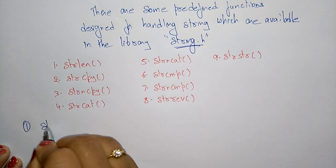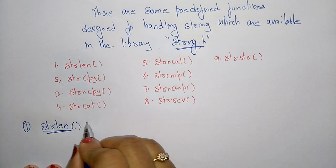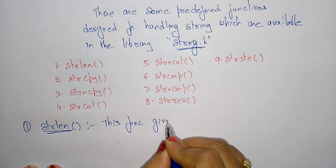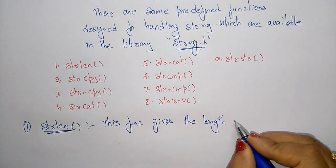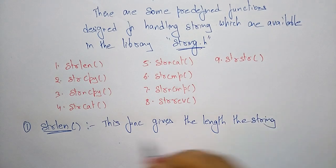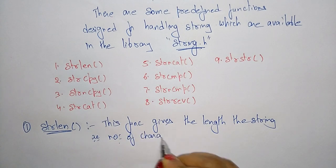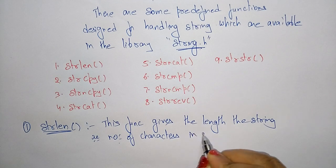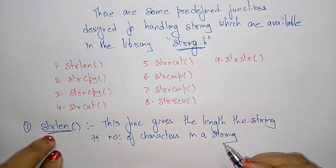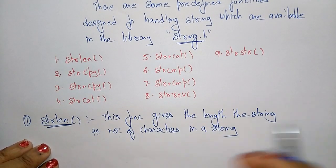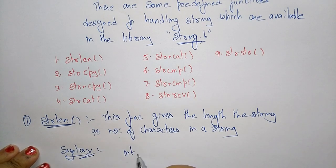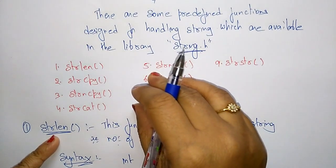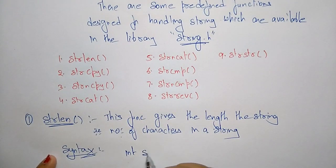The first one is strlen — string length. The main use of this function is that it gives the length of a string. Whatever string you provide, this function specifies its length, that is, the number of characters in the string. The total number of characters present in the string will be returned by strlen. It always returns an integer value. The return type of strlen is integer, even though it operates on a string.